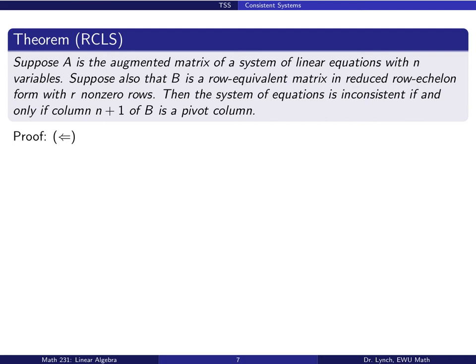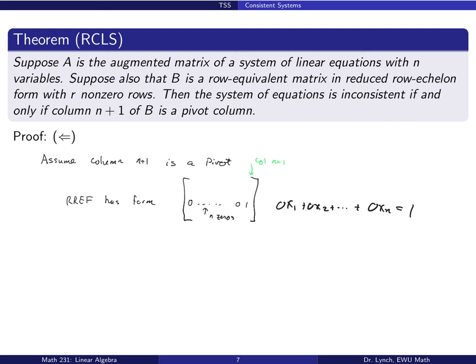To prove this, we start by assuming Q and proving P. In this case, the RREF of the augmented matrix will have some row with N zeros and the (n+1)st entry is a 1, since column n+1 is a pivot column. The corresponding equation would be 0·x1 + 0·x2 + ... + 0·xN = 1 — the nonsense equation we saw before. We know that no numbers can satisfy this equation, so the system has no solution, and systems with no solutions are inconsistent.